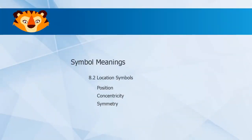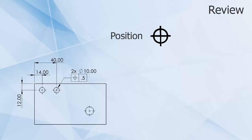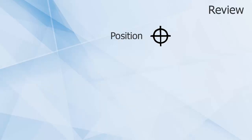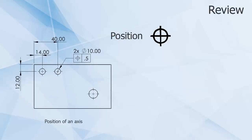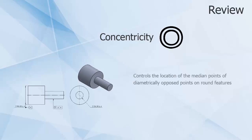We've now discussed all three location callouts. Position is the most common GD&T callout and is used to describe tolerance zones around a nominal location in reference to datums. The two common types of position are position of an axis and position of a feature of size. Concentricity controls the location of the median points of diametrically opposed points on round features in relation to a cylindrical tolerance zone, which references a datum axis.